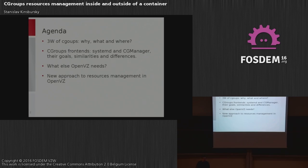Cgroups appeared as an upstream version from Google, from Paul Menage, as a way of managing resources. By resource, people basically understand CPU power, network throughput, memory, and so on. We're all trying to save time or pay less for fewer resources. Cgroups answer the question of how we can limit resources per application.